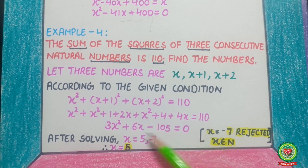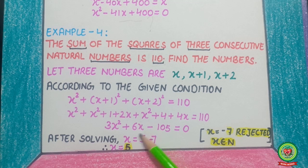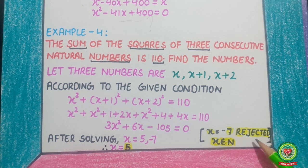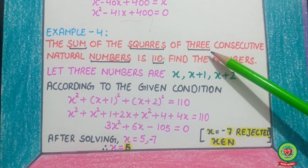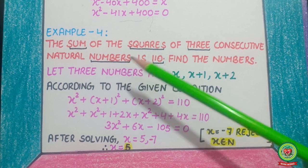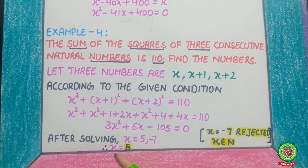Solve this equation using any method. After solving, the answers are x equals 5 and x equals minus 7. But x equals minus 7 is rejected because x belongs to natural numbers. Therefore, x equals 5. These are the examples related to word problems.